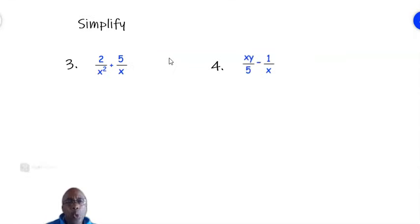In these two examples, we have an algebraic expression as denominators. We don't have numbers. For the first example, we have denominators x squared and x. But we proceed exactly the same way we did in the first two examples.